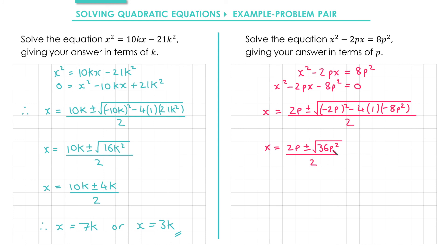The square root of 36p squared is just 6p. So we get x equals 2p plus or minus 6p over 2. If we do it with the plus first, we get 2p plus 6p is 8p divided by 2, which gives us x equals 4p.